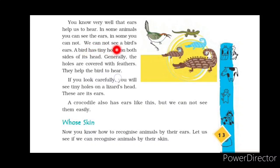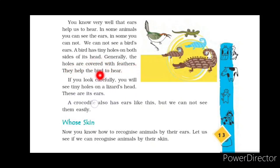We cannot see a bird's ears. Have you ever seen the ear of a bird? It is not visible. But do birds have ears? Yes, obviously birds have ears. Birds have tiny holes on both sides of their head, and these holes help them to hear. Generally, these holes are covered with feathers. Because birds have feathers on their body, their ears are also covered with feathers — that is why we cannot see them.